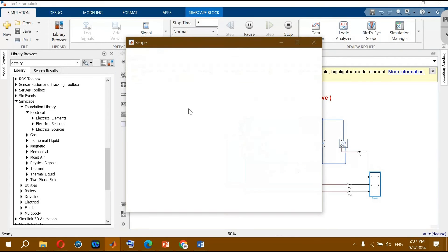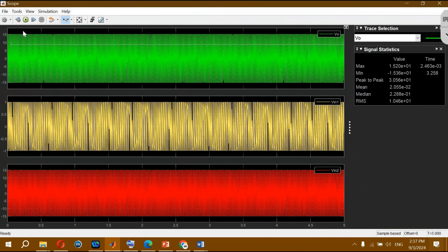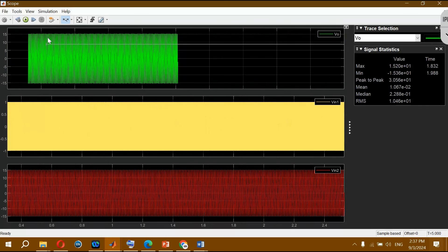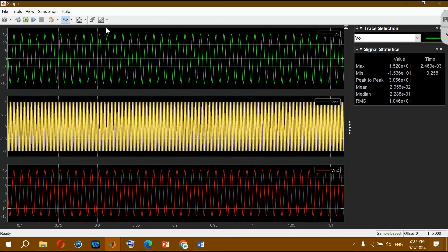Okay, here are the results. The green one is the output voltage, the yellow one is the noise, and the red one is our normal or original signal.